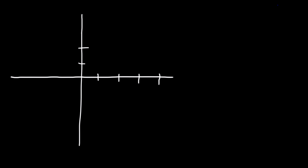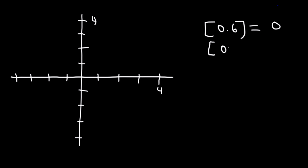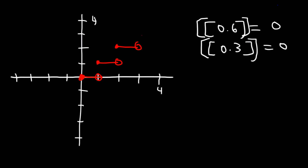Now let's talk about how to graph this function. First, put the marks on the graph — positive 4 on each axis. We know the greatest integer of 0.6 is 0, and of 0.3 is also 0. So we have a horizontal line between 0 and 1 with a y-value of 0: a closed circle at 0 and an open circle at 1. Then the pattern repeats. That's how you graph the greatest integer function.